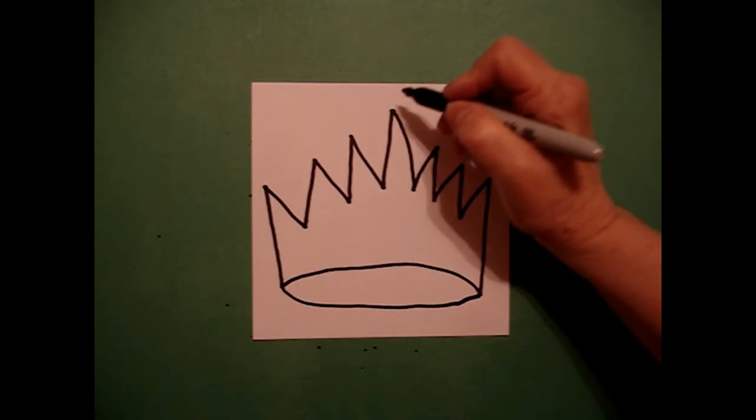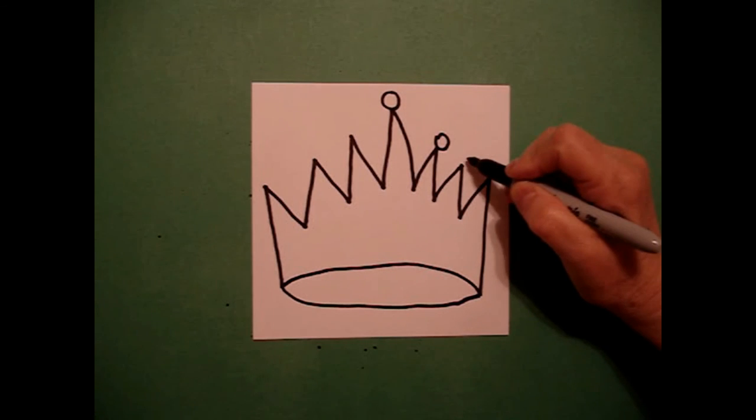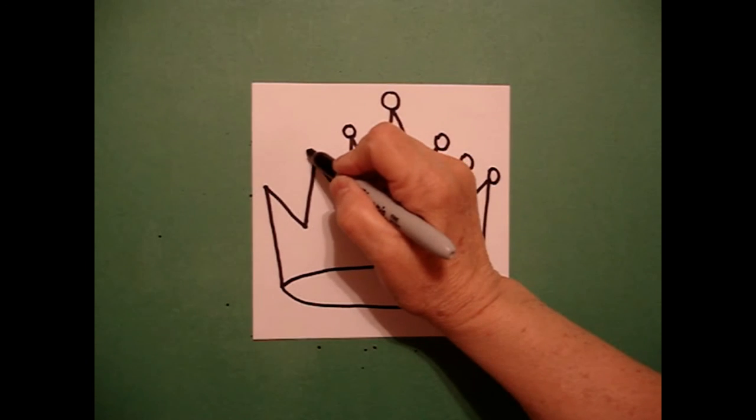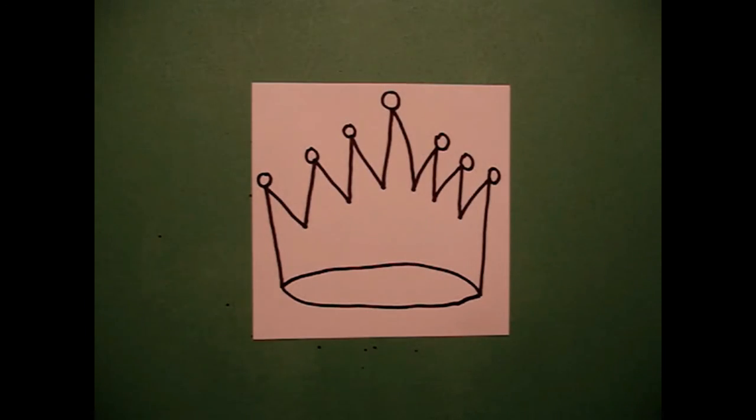At the top of each point, I'm going to put a baby circle on the right, one, two, three baby circles on the left.